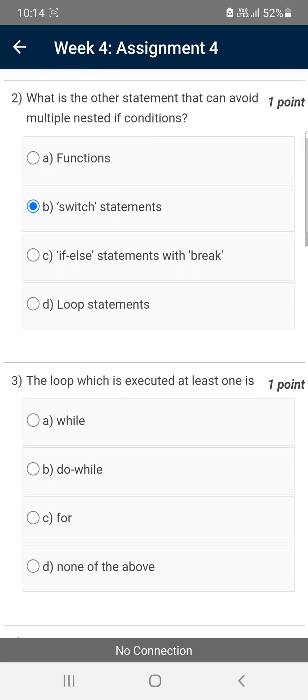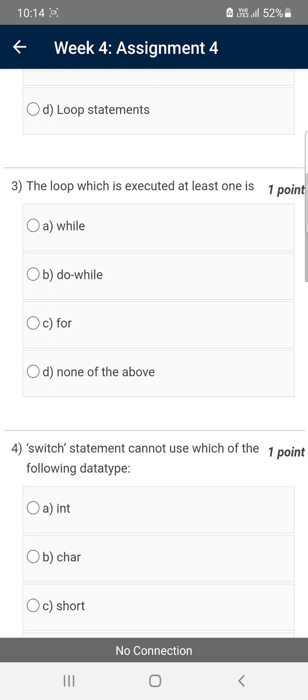Moving on to the third question: the loop which is executed at least once. The answer is option B: do-while loop, because the do block will first execute the statements at least once and later it will go to the while loop. So there is a guarantee that at least once it will be executed.